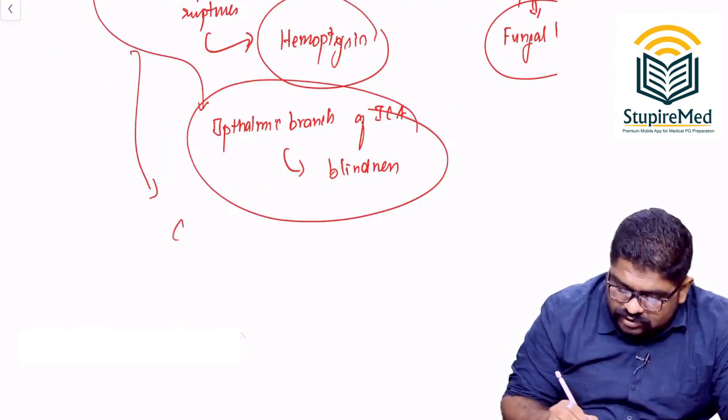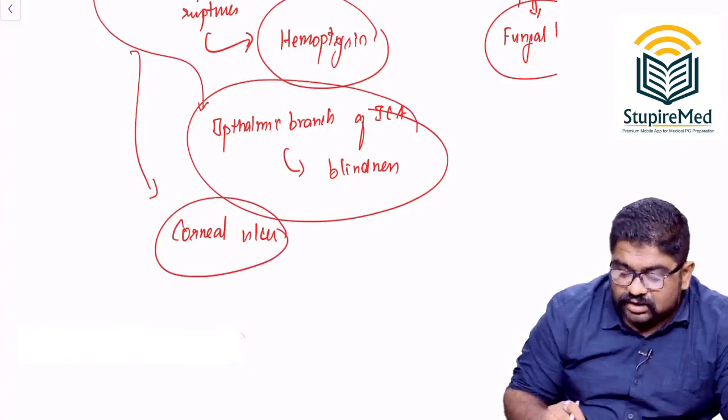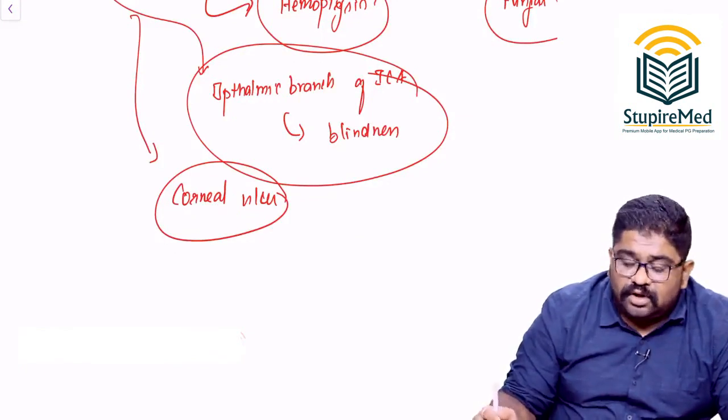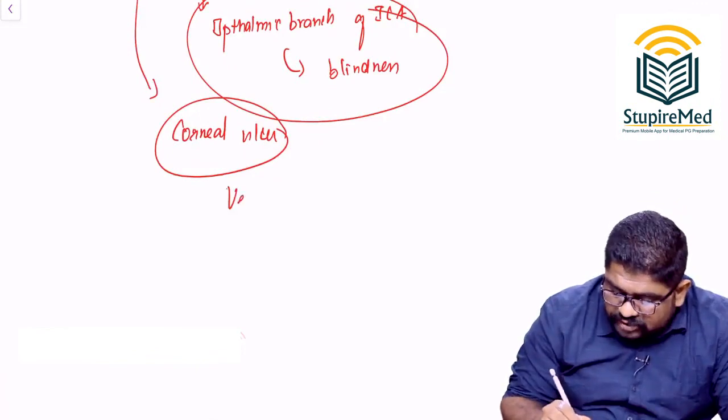Next, this organism can cause corneal ulcer. How does it cause corneal ulcer? It's a fungus attacking the cornea. Though they are not inherently invasive, you should have a traumatic entry wound for it, which is actually vegetable injury.